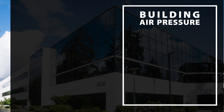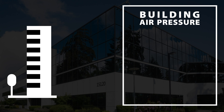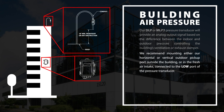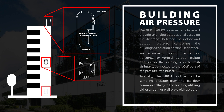Whether the building requires a slightly positive or negative pressure, you will need an outdoor and indoor pressure sample reference. Our DLP or MLP2 pressure transducer will provide an analog output signal based on the difference between the indoor and outdoor pressure, controlling the building's ventilation or exhaust damper. We recommend mounting either our horizontal or vertical outdoor pickup port outside the building or in the fresh air intake, connected to the low port of the pressure transducer. Typically, the high port would be sampling pressure from the first floor common hallway in the building, utilizing either a room or wall plate pickup port.